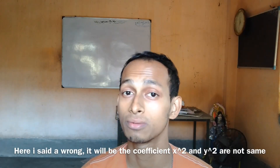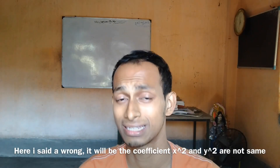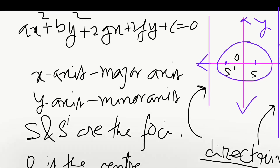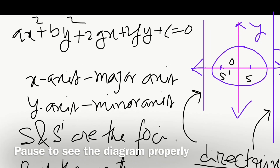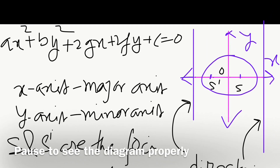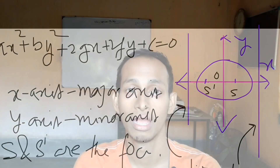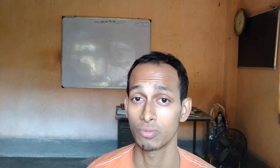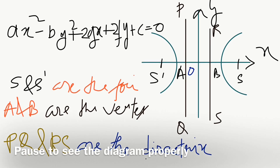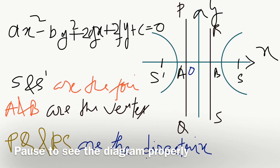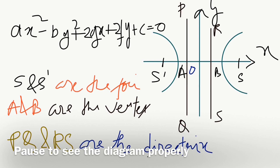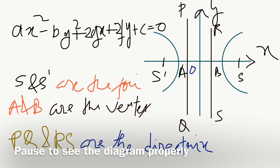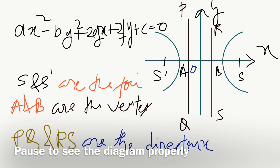Whenever the coefficient of x squared and coefficient of y squared are not the same — they are not equal — but they are of the same sign, then it will be an ellipse. And whenever the coefficients of x squared and y squared are not equal and contain different signs — that is, one is positive and one is negative — then it will represent a hyperbola.